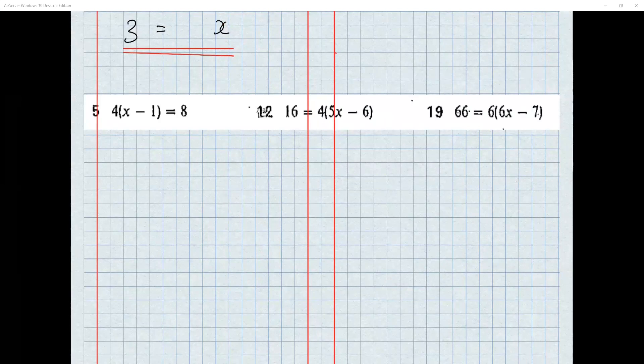I want you to set the questions up properly when you do your work. Question number 5: we start at x. Minus 1 is the first action, times by 4 is the second action. Opposite time by 4 is divided by 4, leaving x minus 1 equals 2. Then opposite of minus 1 is add 1, so x equals 3. Done.